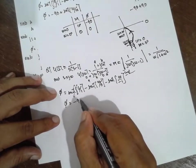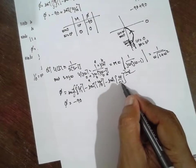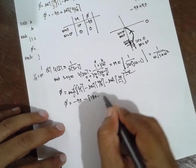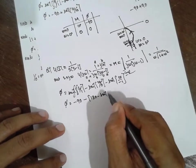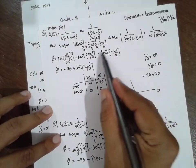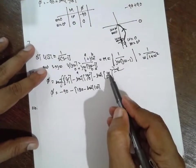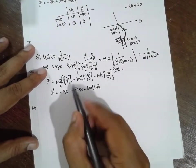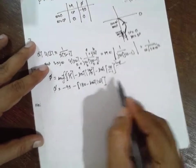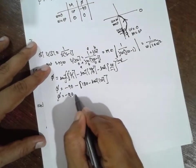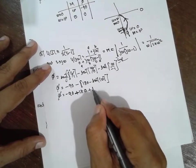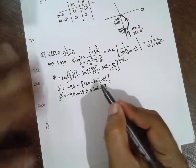If a minus sign appears at the bottom of the tan inverse expression, you have to do it in this way: minus 180 minus tan inverse(ω). This is the special case. If the minus sign appears at the top, just multiply. If the minus sign appears at the denominator, then you have to use 180 minus tan inverse(ω).